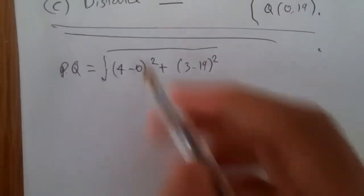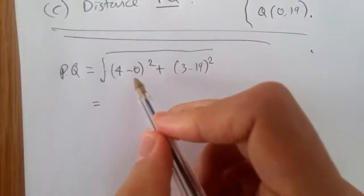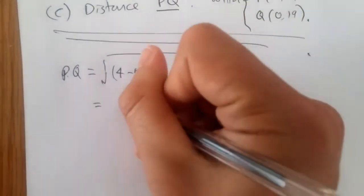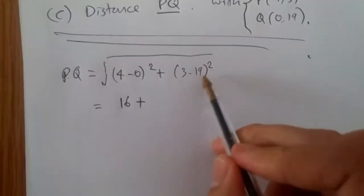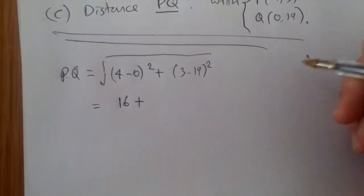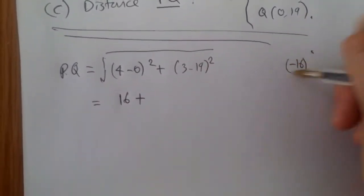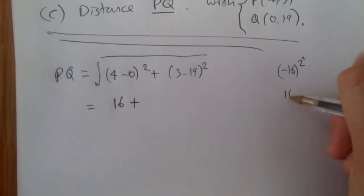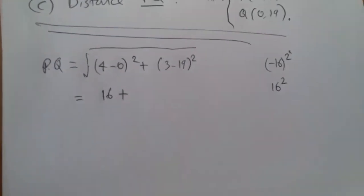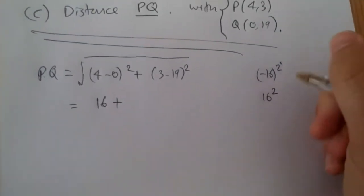Now, just again, simple math. So let's expand the bracket. So 4 take away 0, squared is 16. 3 take away 19 is minus 16. So minus 16 squared, it's pretty much, you can just work with 16 squared. If you don't know this one already,